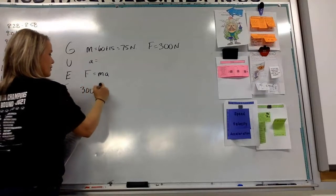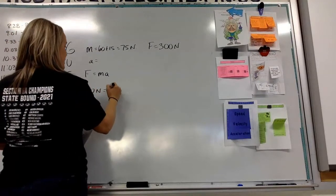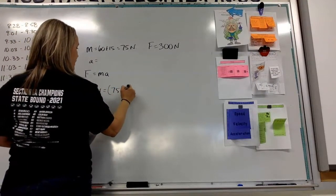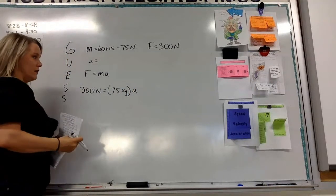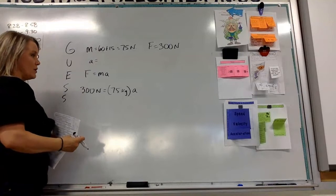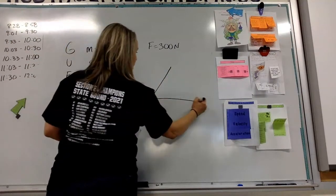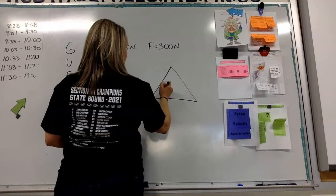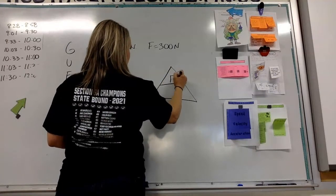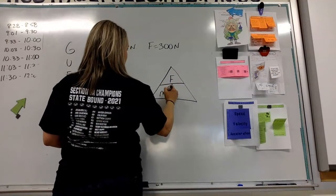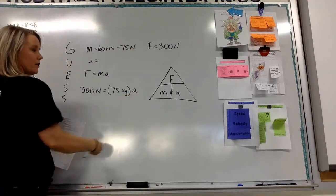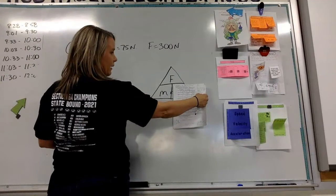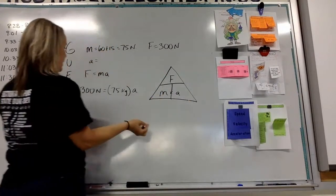So our equation for all of these is F equals ma, and now we're just going to substitute. So, 300 newtons equals 75 kilograms times an unknown a. Well, what we do there, if we use our triangle of force, mass times acceleration, we don't know a, so we cover up a, and it's force over mass.